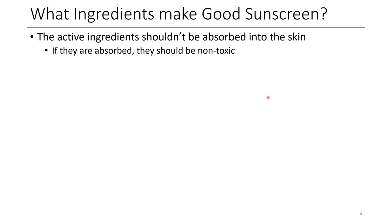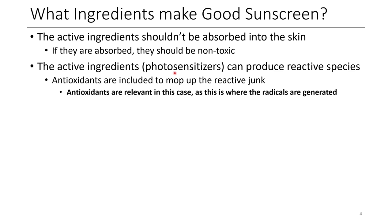So what ingredients make a good sunscreen? The active ingredients shouldn't be absorbed into the skin. Ideally, whatever the active ingredients in your sunscreen are, they shouldn't be something that can be absorbed into the skin, and if they are absorbed, they shouldn't be toxic or should have minimal toxicity. It's worth noting that these active ingredients are photosensitizers, meaning they're going to produce reactive species when excited with UV light. So one thing that people who make sunscreens add is antioxidants. Most of the time when people talk about antioxidants it's all hype, but in this case, because we're generating radicals right on the surface of the skin, if you have an antioxidant present it's exactly where it needs to be — so there's a good rationale for why an antioxidant would be beneficial here.